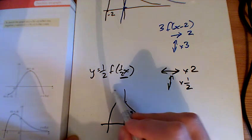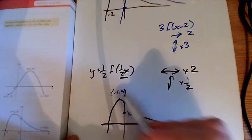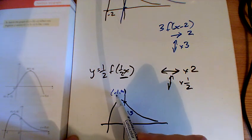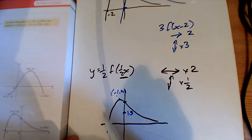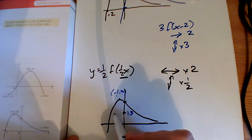This point here was at minus 1, 4, so now it's two times further away, so it's at minus 2 and half as high, so I've got minus 2, 2 there.